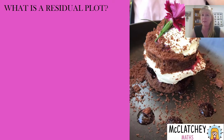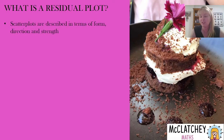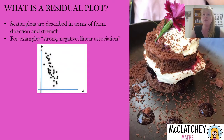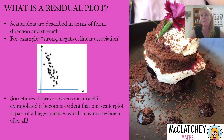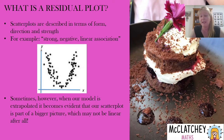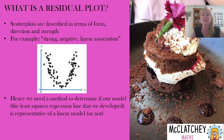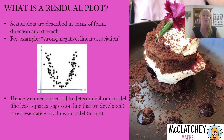So firstly, you might be wondering what is a residual plot and why would I need to draw one? Let's consider scatter plots — we've been doing those since grade 10, always describing those in three ways: in terms of our form, direction, and strength. So in this particular example, we would say that this was a strong negative linear association. However, sometimes if we extrapolate our information beyond what we've been given, it might be part of a bigger picture that's not linear at all — for example, part of a parabola. So we need a way to determine whether our least squared regression line is appropriate to use for a linear model or not.